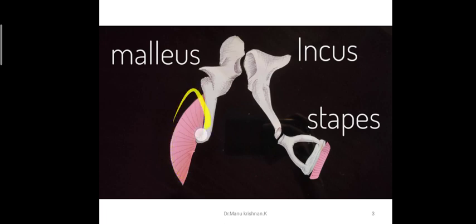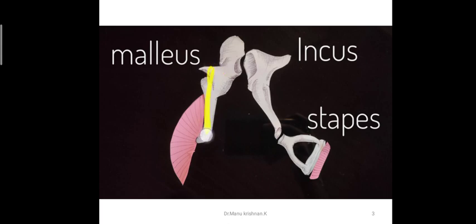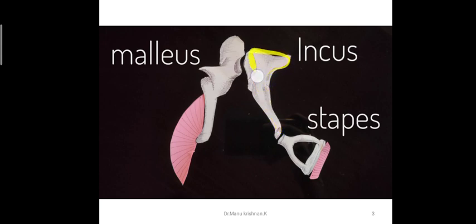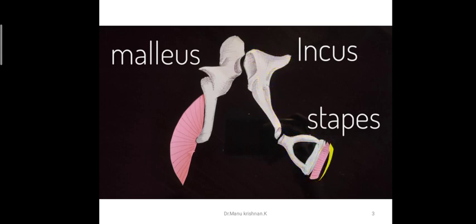Here you can see the tympanic membrane which is connected to the malleus. This is the handle of the malleus, and this is the malleus bone. This one here is the incus bone. Then this is the stapes bone, which is connected to the oval window.